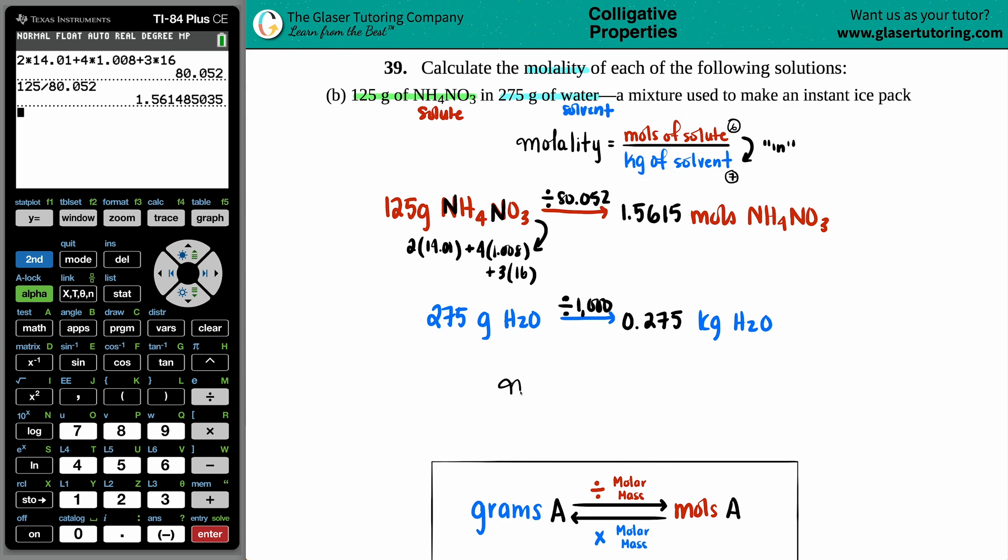Now, just know that molality is like this little, cute little italics M. Capital M is molarity, so just be careful. So the numerator would be 1.5615, and I'm going to divide it by 0.275. I'm going to just take this whole number and divide it by 0.275. That looks good to me. And there's your molality.